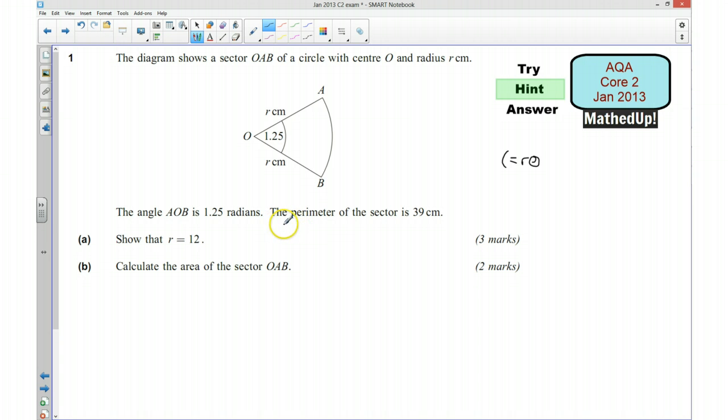Now bear in mind we've been told the perimeter of the sector, the distance all the way around, is 39 cm. So now you want to decide how you can put together an equation that you can solve, and the answer that you should get is r is equal to 12.